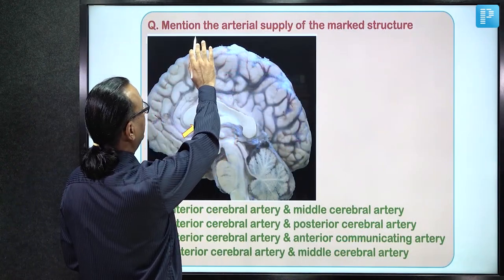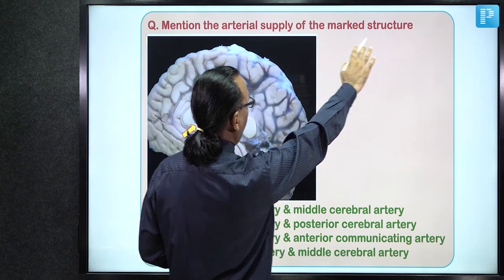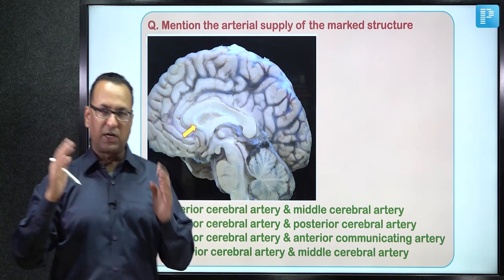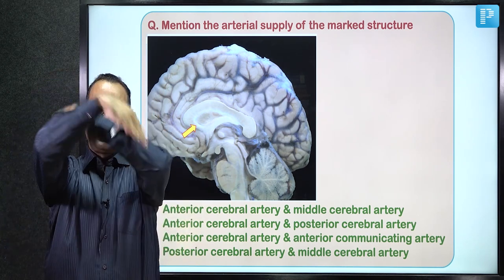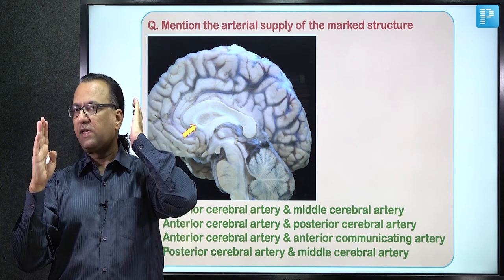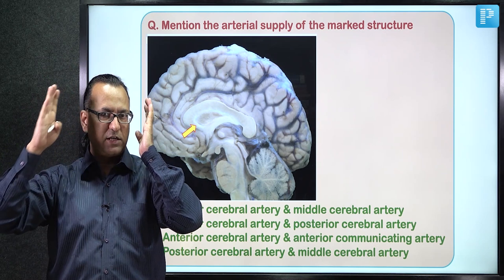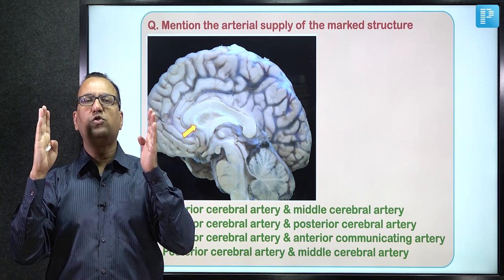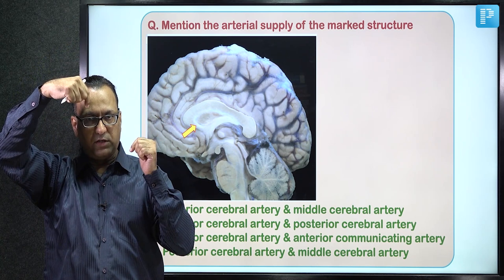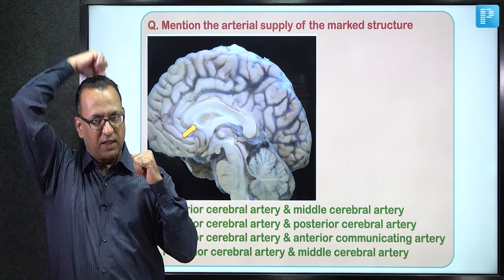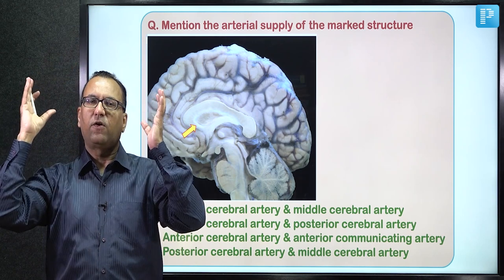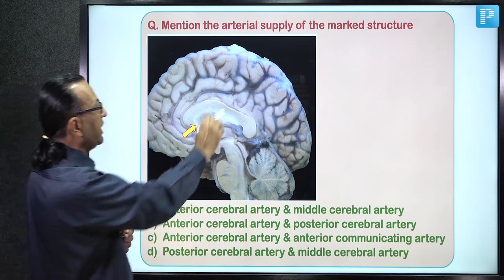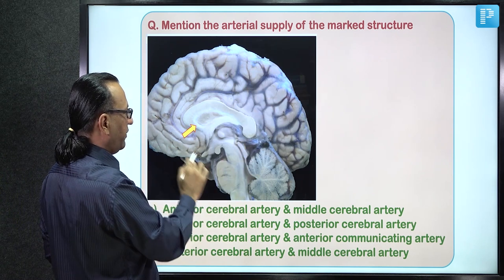This diagram-based question asks about the arterial supply of the rostrum of the corpus callosum. The corpus callosum is a collection of commissural axons connecting the right and left brain across the midline. Cutting the corpus callosum (once used to treat epilepsy) leads to split-brain syndrome where the two hemispheres cannot communicate.